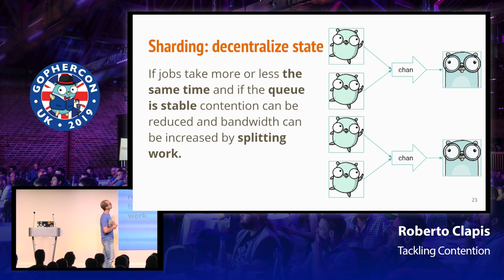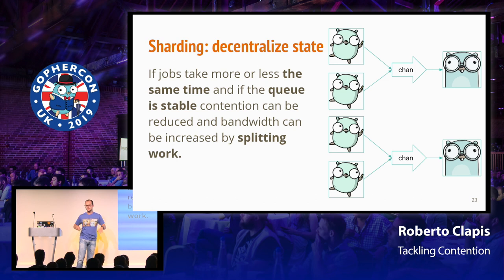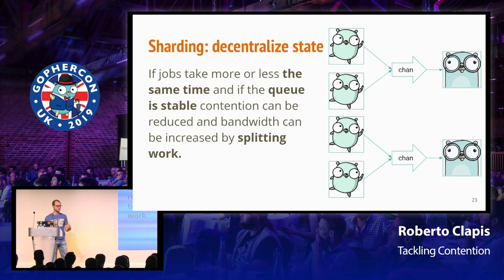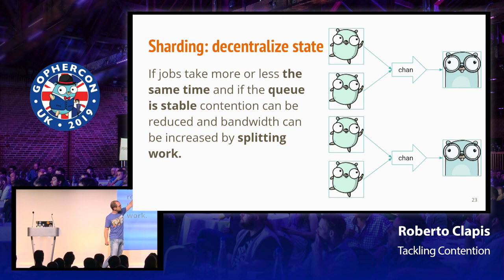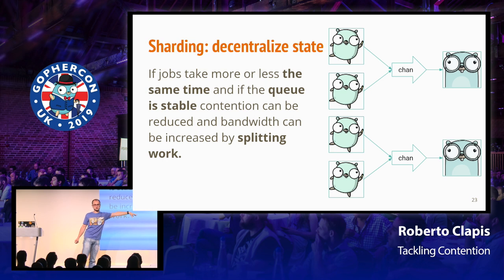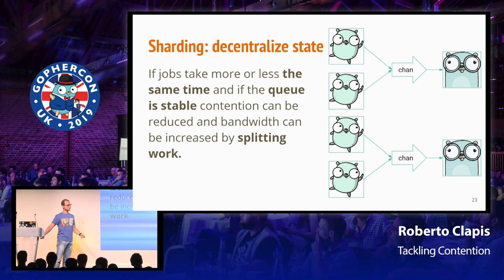One way to address the problem is to decentralize. Do not use a central state. If you write your code so that you can pass state into the functions you're calling, instead of one single shared state you can create multiple ones, with something on the side that synchronizes values from those states just when you need to read them for real. This works if you know the ratio of producers and consumers — you just break them down upfront. Beware that this only really works if jobs are roughly the same duration. If some are very long-running, one worker might starve. You actually break down contention by the number of states you have, which is pretty good.